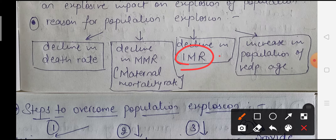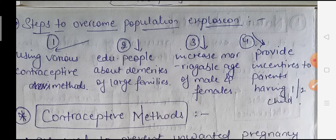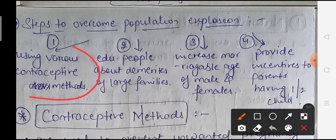With the population in the reproductive age increasing, these factors together contribute to population explosion. To control population growth, the first method is to use contraceptive methods. People can also be educated that large families are a disadvantage, the age of marriage for males and females can be increased, parents can be made aware of child welfare, and incentives can be given to encourage small families.